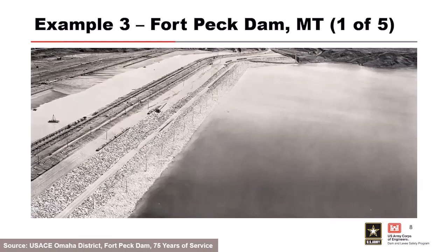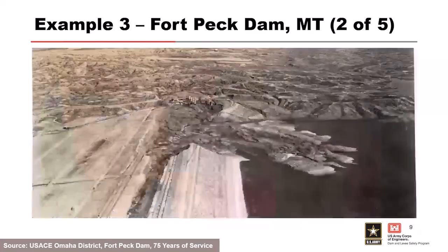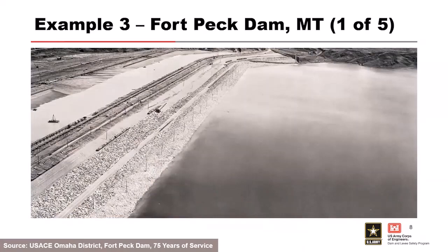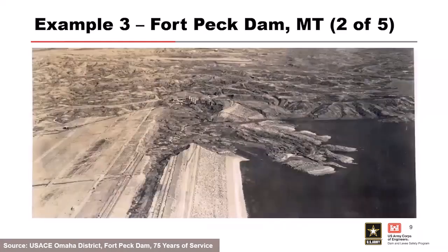You can't talk about slope instability in an Army Corps presentation without mentioning Fort Peck Dam. This is the biggest slope instability issue we've ever had in the Corps and the only one that caused loss of life at one of our dams. It occurred during construction of Fort Peck Dam in 1938. The right embankment slid on a weak layer of material in the bedrock that wasn't known to exist at the time—they discovered this weak foundation layer only after the slide.